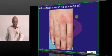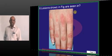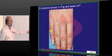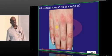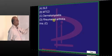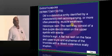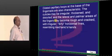Now on the knuckles you can see classical scaly lesions called Gottron's papules, which are seen in the case of dermatomyositis — this is what you need to remember.